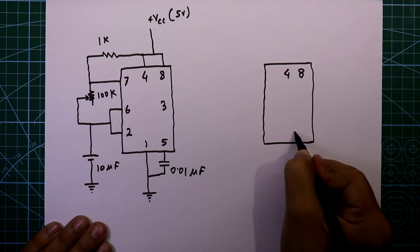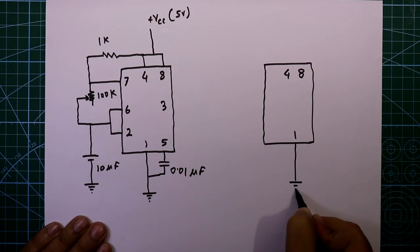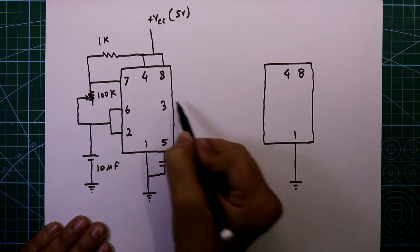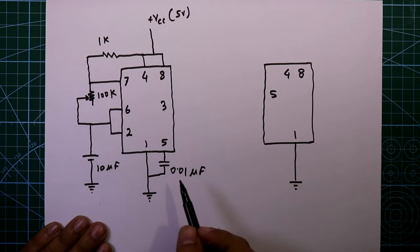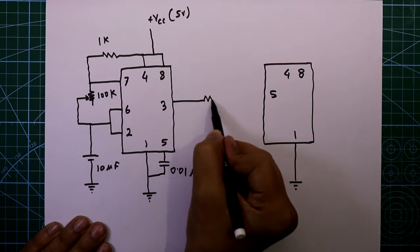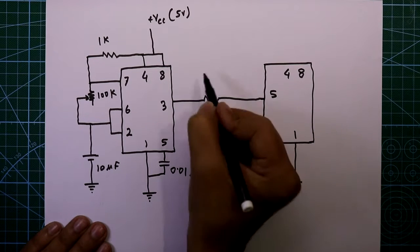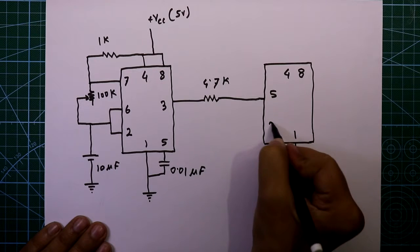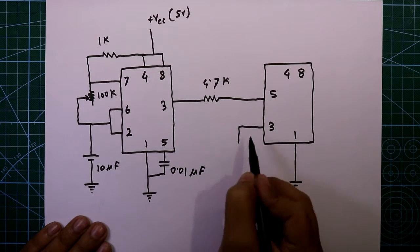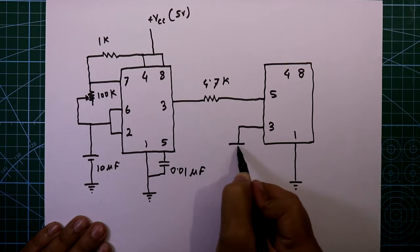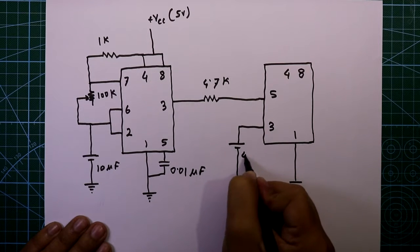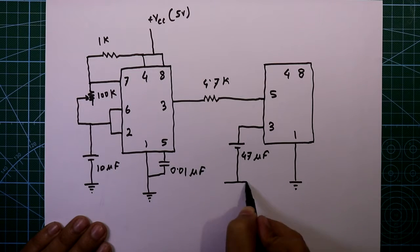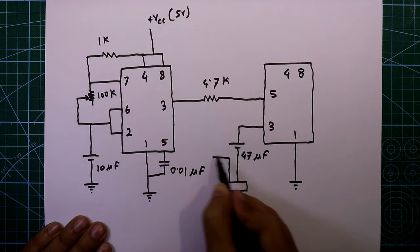The output at pin number 3 is connected to pin number 5 of the second IC, and in between we have to connect a 4.7 kilohm resistor. The output, pin number 3 of the second IC, has one capacitor connected — the value is 47 microfarad — then here is our speaker.